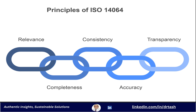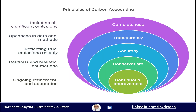There are seven key principles in Section 5: relevance, completeness, consistency, accuracy, transparency, conservatism, and continuous improvement. Completeness means the organization's inventory has to include all the significant sources of emissions and removals within its boundaries — no cutting corners or sweeping anything under the rug. Transparency goes hand in hand with that — being open about how they got their data, what methods they used. Building trust and credibility.